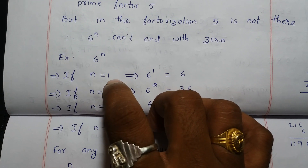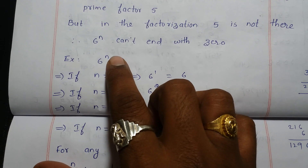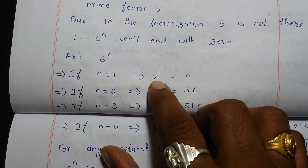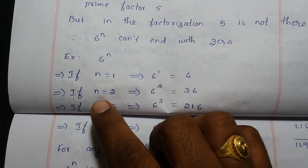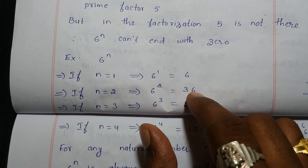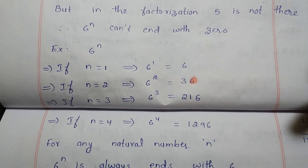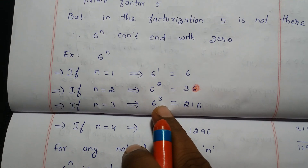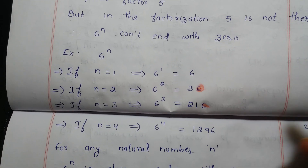Let's verify with examples. Taking n = 1: 6 to the power of 1 is 6, which ends with 6. Taking n = 2: 6 to the power of 2 is 36, which ends with 6. Taking n = 3: 6 to the power of 3 is 216, which also ends with 6.